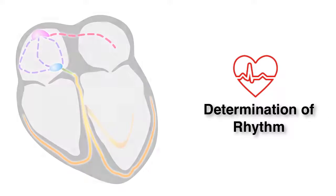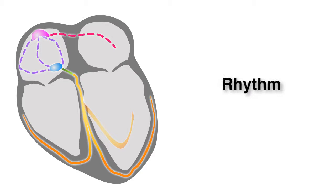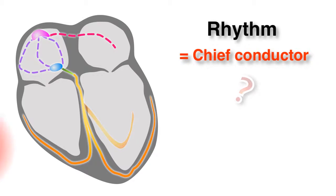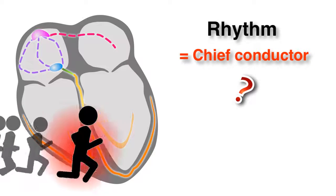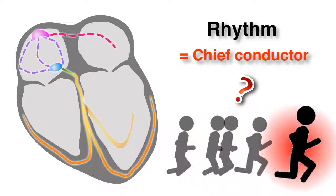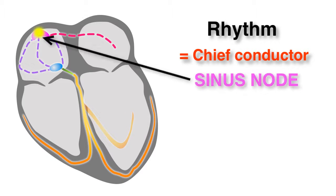Now we will address rhythm and demonstrate what is normal sinus rhythm. When you are looking for the rhythm, you are looking for the chief conductor — in other words, who is running the show? In normal sinus rhythm, the conductor is the sinus node, which initiates depolarization.